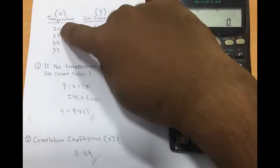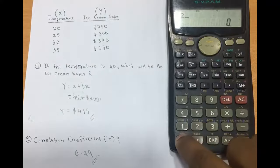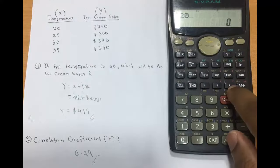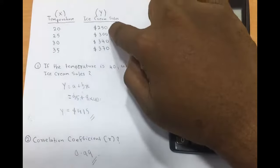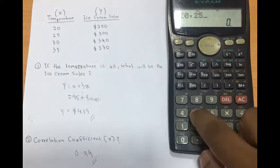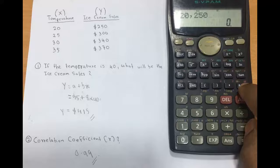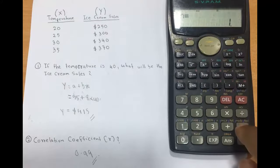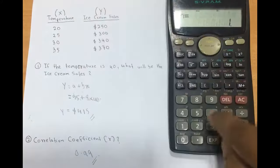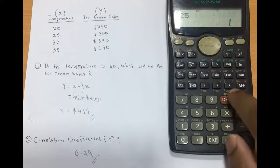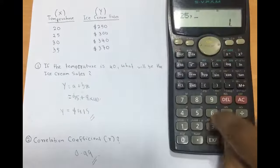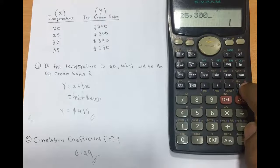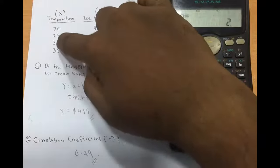To enter data, first enter the x value which is 20, then press the comma button, then enter the y value which is 250, and press the M+ button. Next, enter 25, press comma, enter 300, and press M+ again.